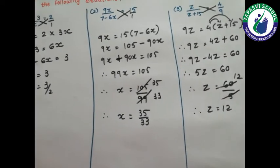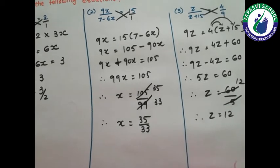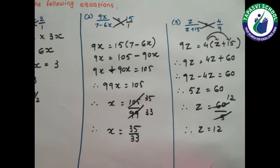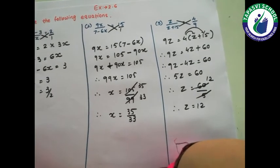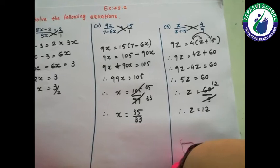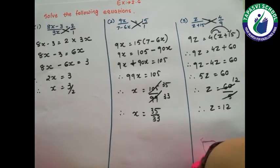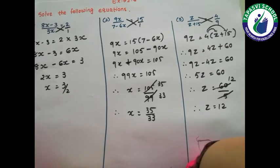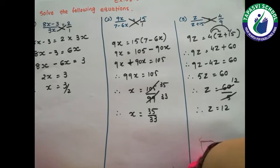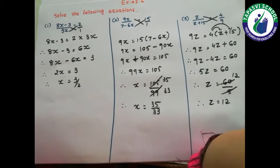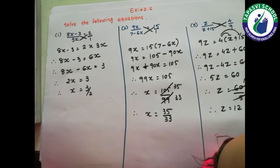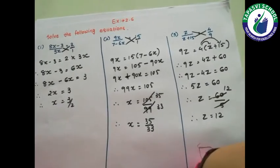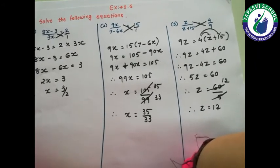Now students, in this exercise 5 sums are given. Out of these 5, I have done 3 sums. The next 2 sums are your homework — you are supposed to solve them because all are of the same method. Keep doing practice at home students, because these are very important for the simplification of sums in your standard 9 and 10. Till then, goodbye. Have a nice time.